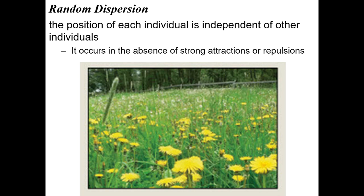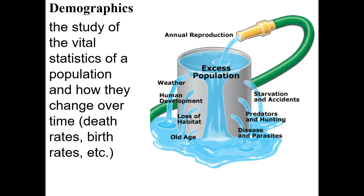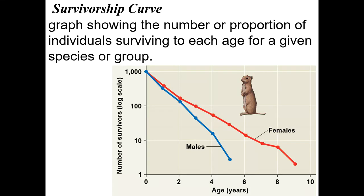Now we look at demographics — things like death rate, birth rate, and age structure. Are there mostly young individuals in the population, or is it a more stable population? AP Bio really loves graphs, so you should be able to look at a survivorship graph and understand what it means. The y-axis shows number of survivors — high up means many survivors, low means very few.